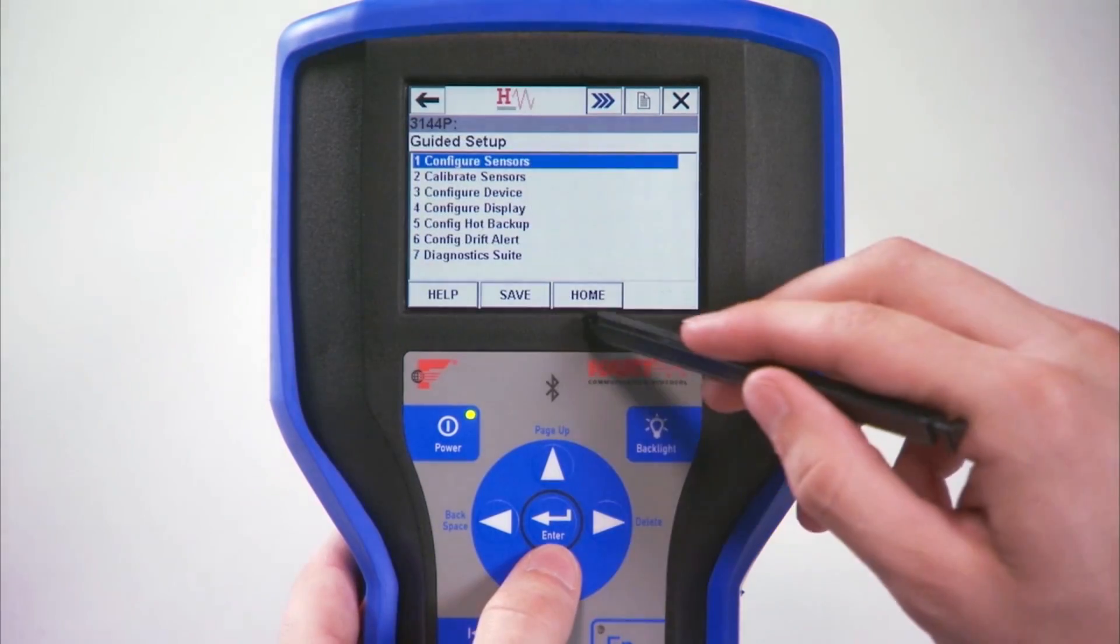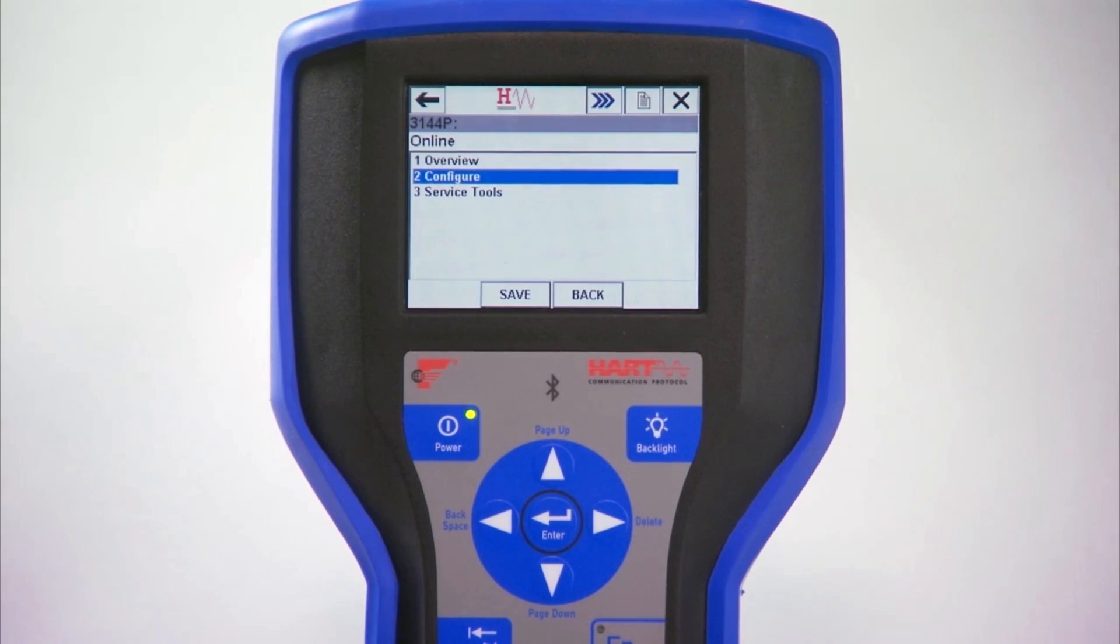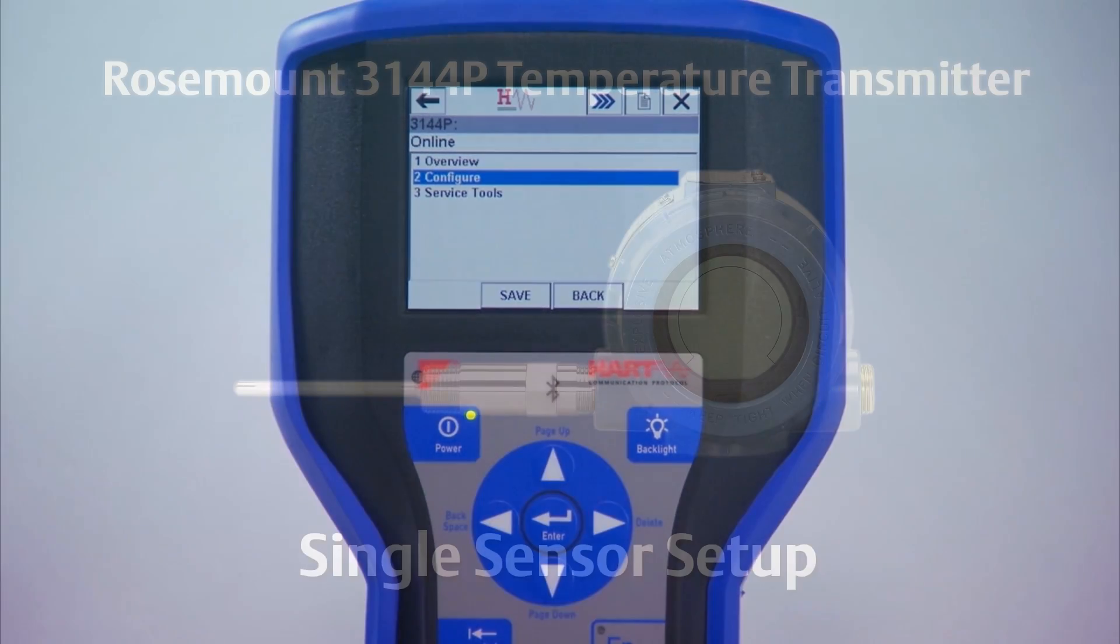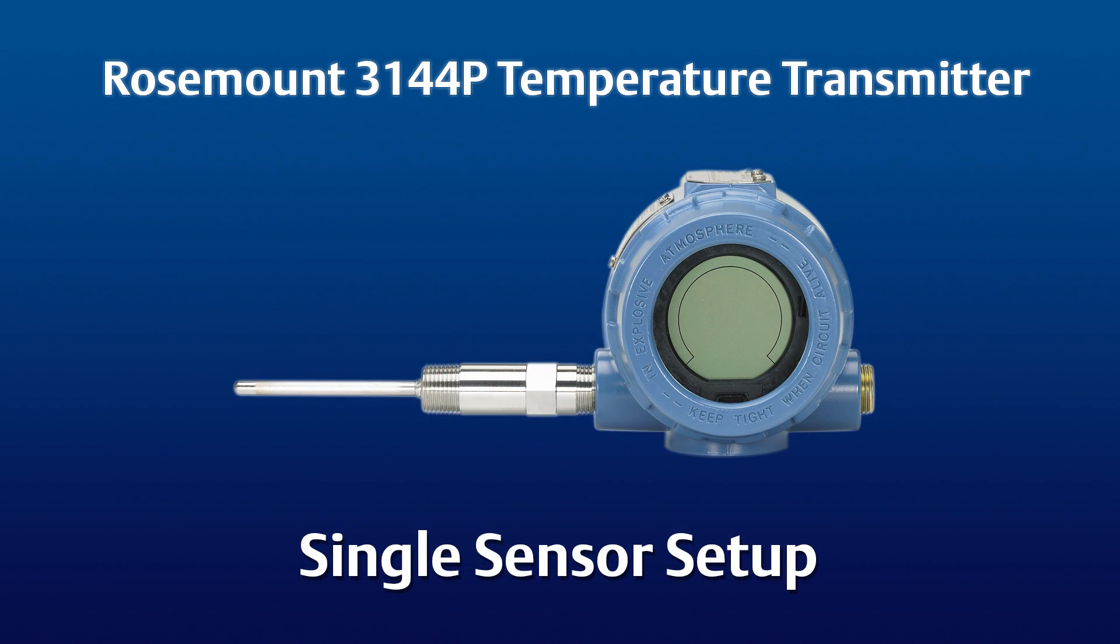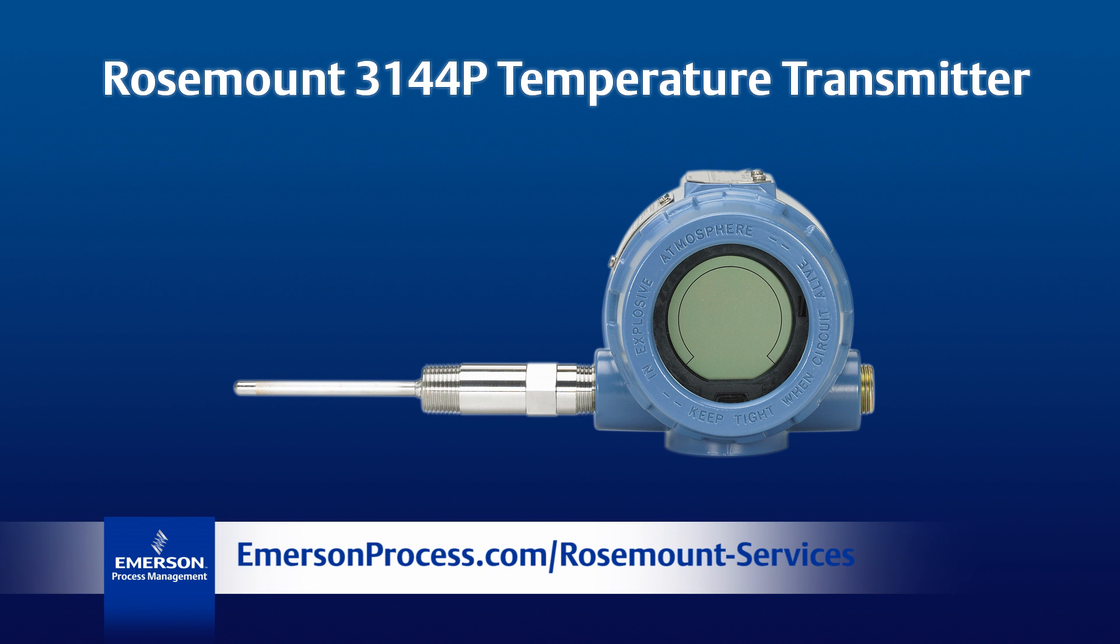Select Exit and then press the Home button to get back to the Home screen. For more information on single element sensor wiring and configuration for the 3144P transmitter, please see the Quick Start Guide or go to the Emerson website.